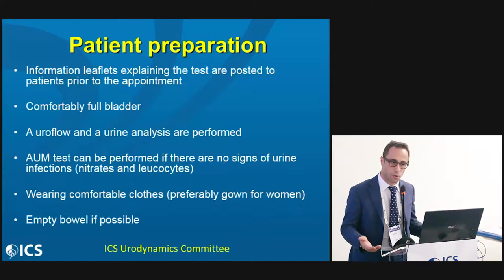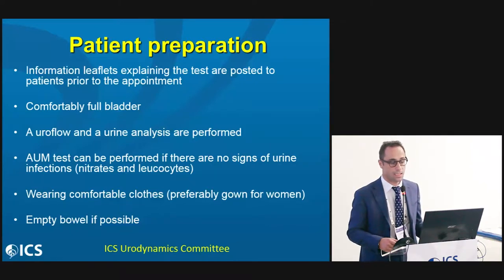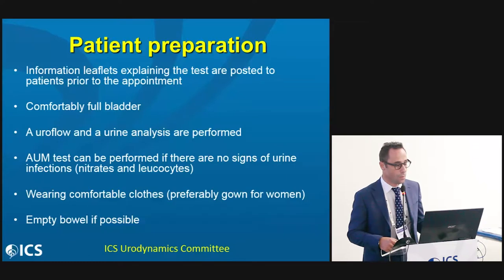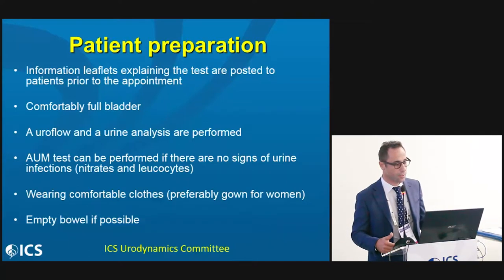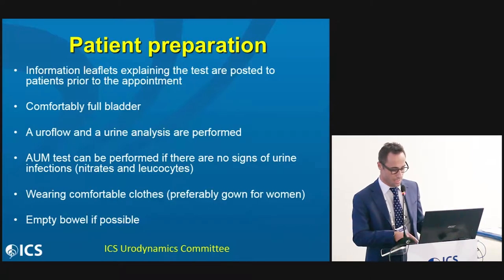Before we perform an AUM test, we have to send the patient information leaflets explaining what the test involves. We must inform the patient to attend with a comfortably full bladder and an empty bowel if possible, and the patient can wear comfortable clothes, preferably a gown for women. Before starting the study, a uroflow and urine analysis are performed. If there is no sign of nitrites or leukocytes indicating urine infection, then the AUM can proceed.